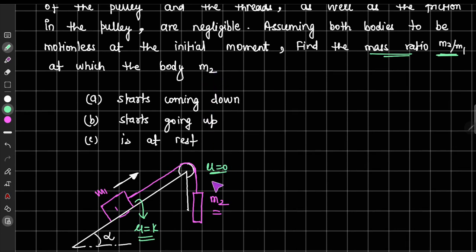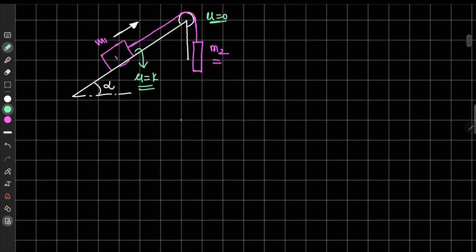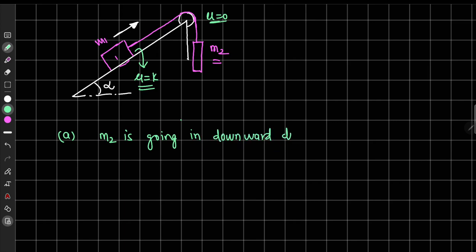We have to find the ratio m2 upon m1 in three different cases: first when m2 is going in the downward direction, second when m2 is going in the upward direction, and third when m2 is at rest. Let us first talk about the first case when m2 is going in the downward direction.